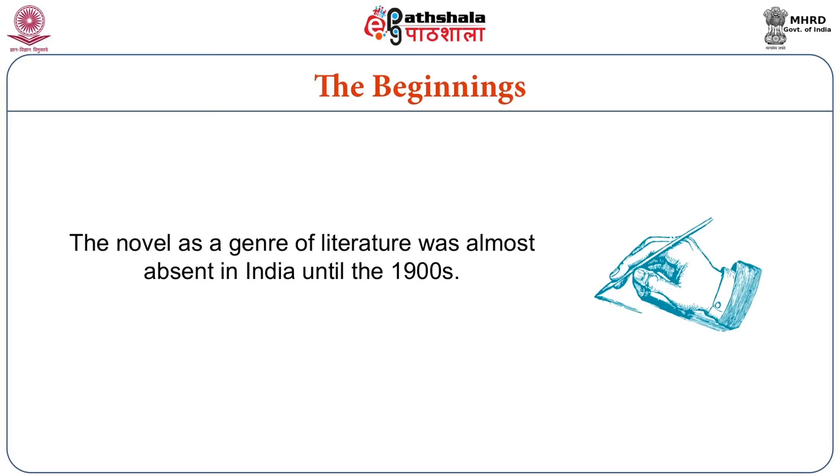The history of Indian literature in English is considered to be one and a half centuries old. The Travels of Dean Muhammad is generally considered to be the first work in English written by an Indian, published in the year 1793. The novel as a genre remained absent from the Indian scene up to the 1900s. The establishment of the East India Company was the most influential factor in propagating Indian English literature in India.